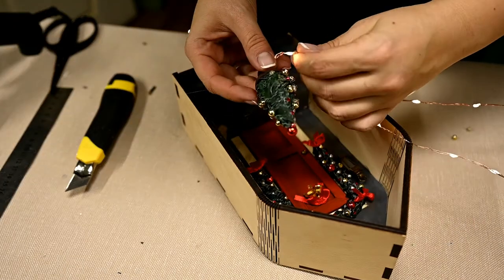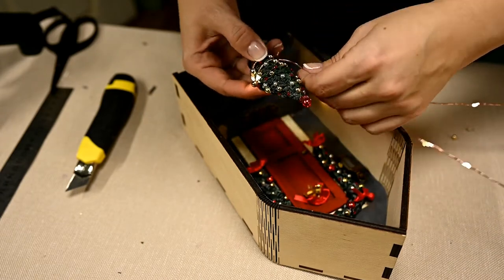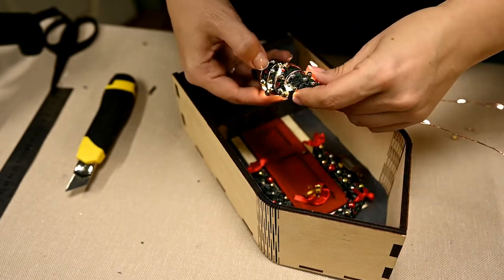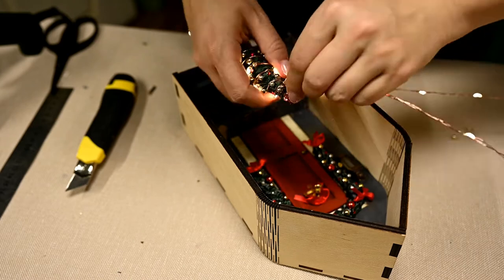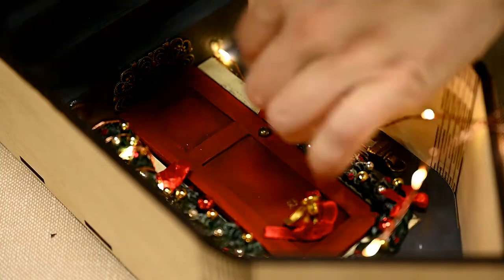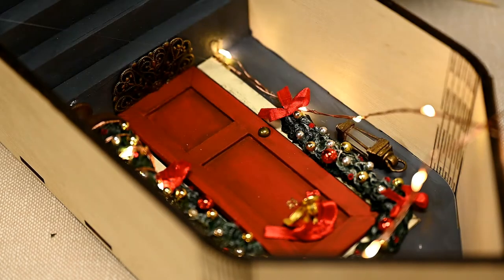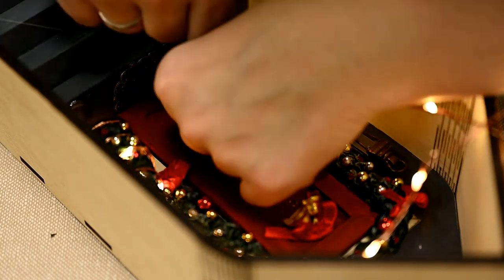I'm twisting fairy lights around the tree and then I go along the door. I'm hot gluing the other side of the lights near the hole and also go along the door.